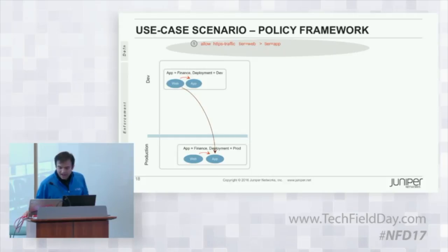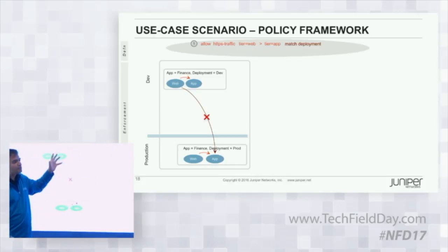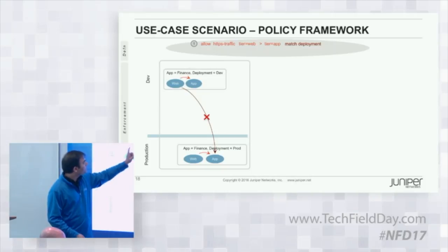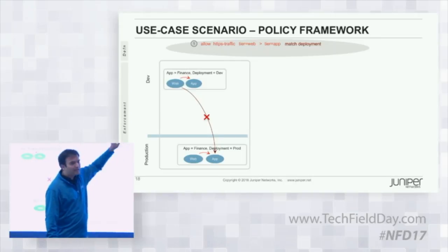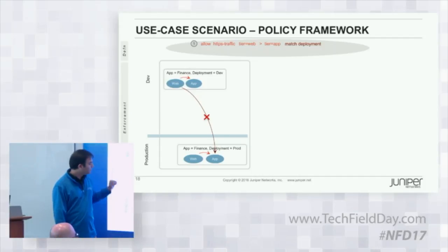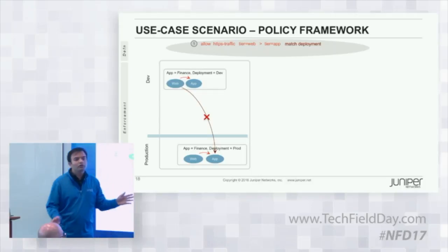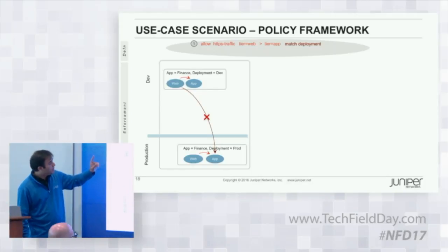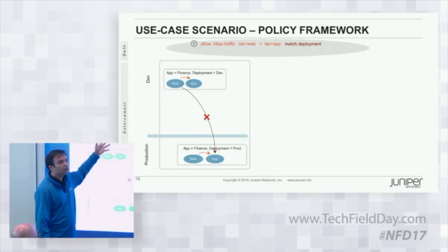If I want to prohibit that, we provide that using our patent-pending match clause. This match clause makes the policy multidimensional: it says allow HTTPS between web and app so long as both have the same deployment. If both web and app are in dev, allow it. If both are in production, permit that traffic. But if web is in dev and app is in production, I'm going to prohibit that. This is extremely powerful — without the match clause, you would have to write multiple different rules.